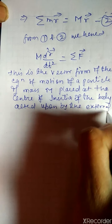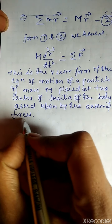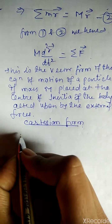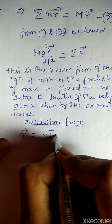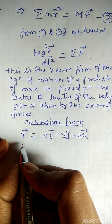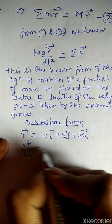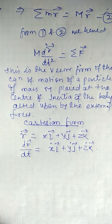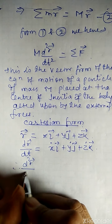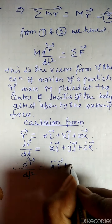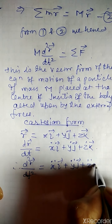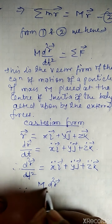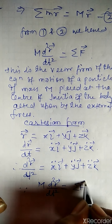Now let us see the Cartesian form. For the Cartesian form, let us take R = xi + yj + zk. Therefore dR/dt = ẋi + ẏj + żk, and therefore d²R/dt² = ẍi + ÿj + z̈k.